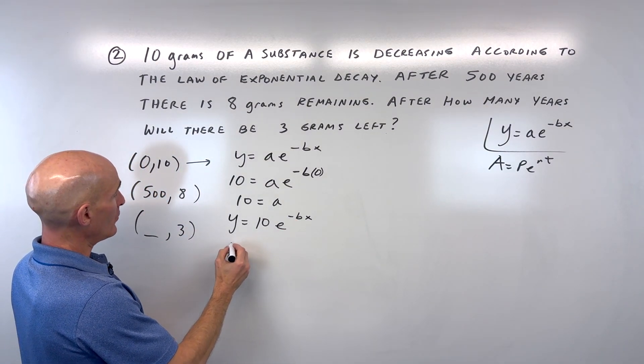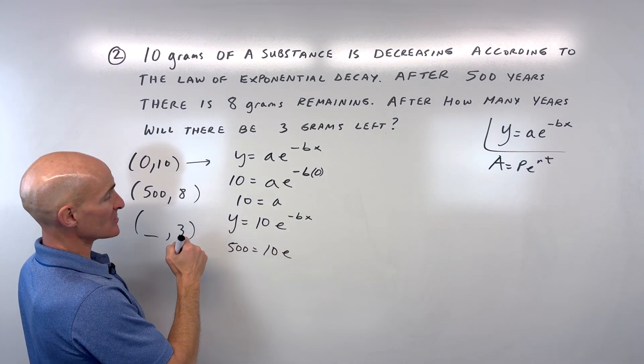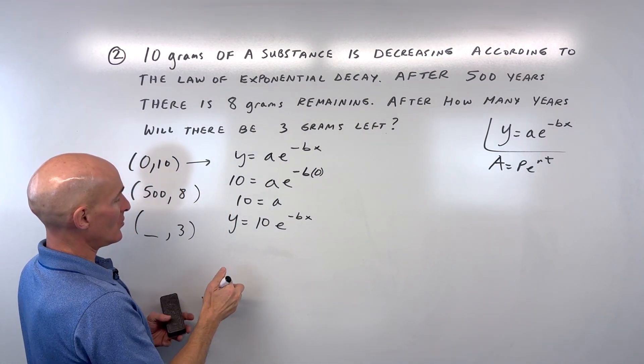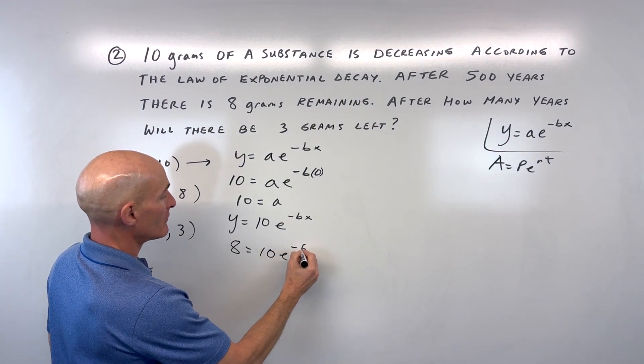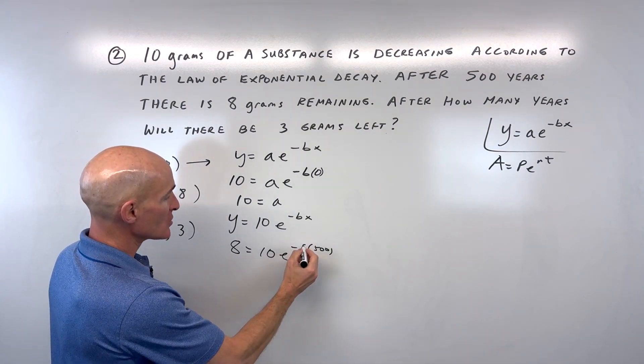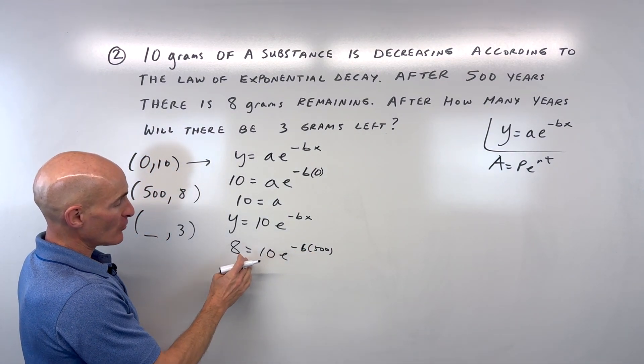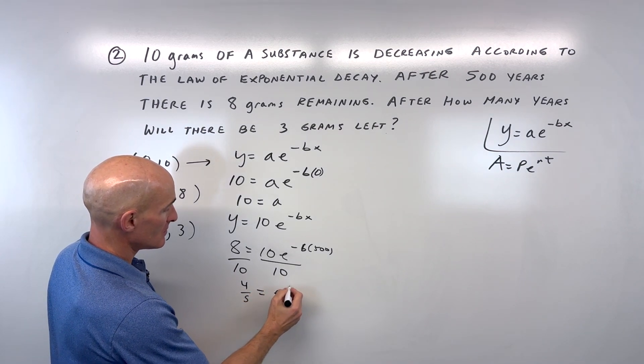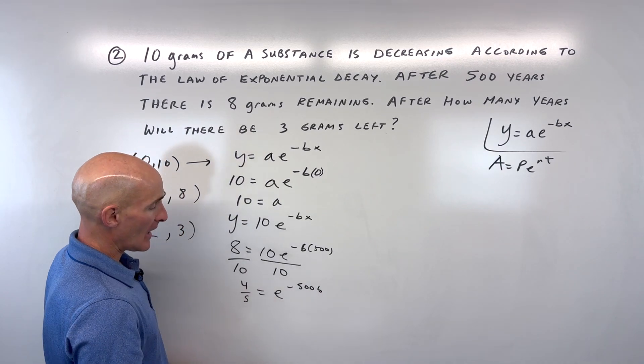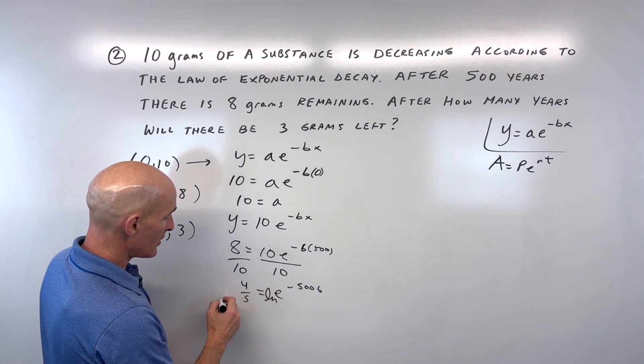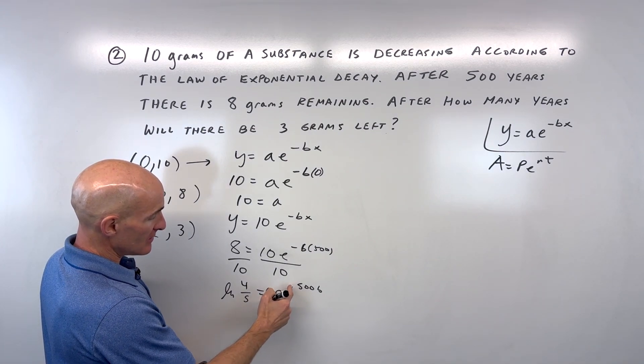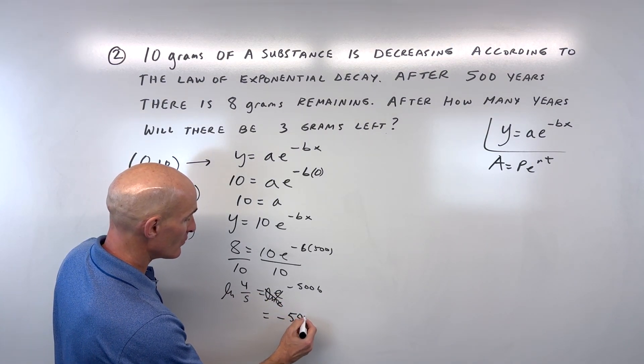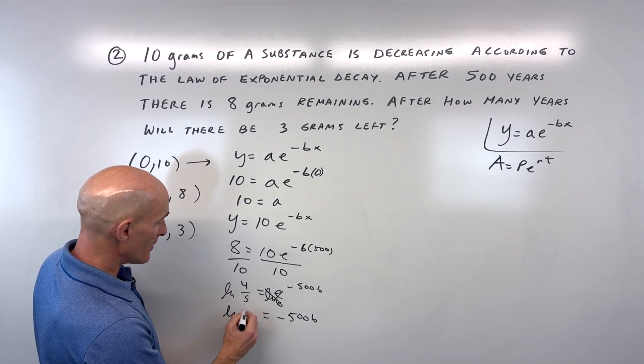Actually, I said that wrong - after 500 years there's 8 grams remaining. So when x is 500, we have 8 grams remaining. Let's solve for b. Divide both sides by 10 - 8 tenths reduces to 4 fifths. Take the natural log of both sides. Natural log is log base e, and e to the negative 500b are inverses, so we get negative 500b equals natural log of 4 fifths.